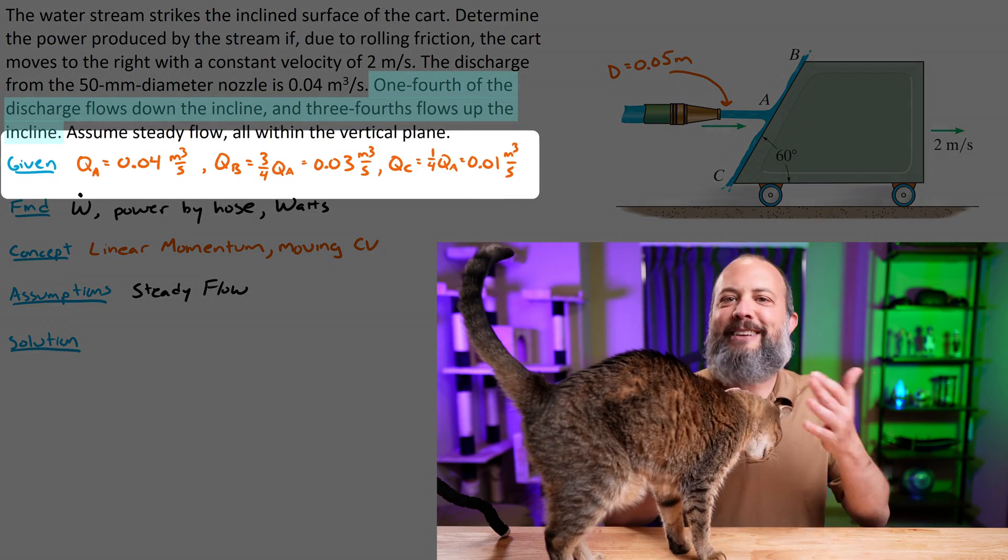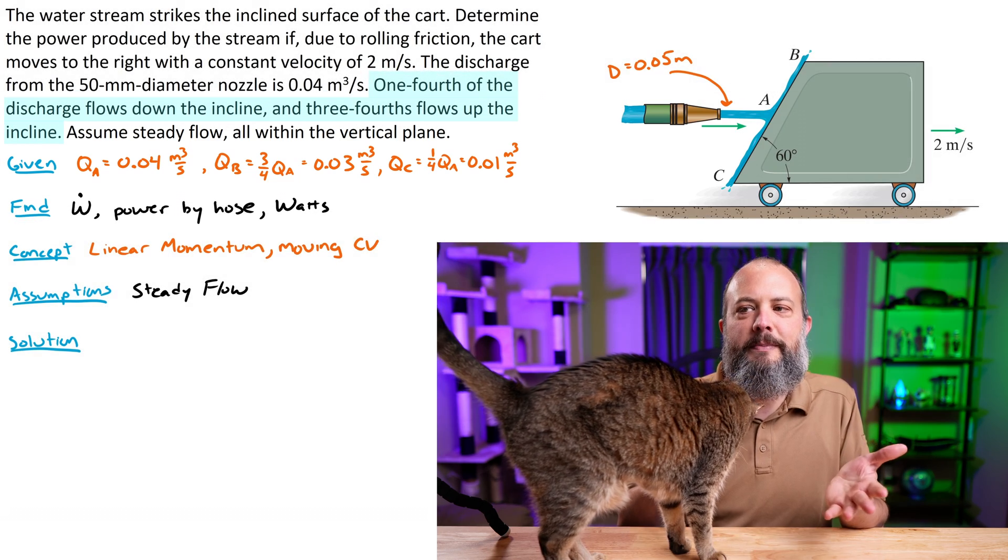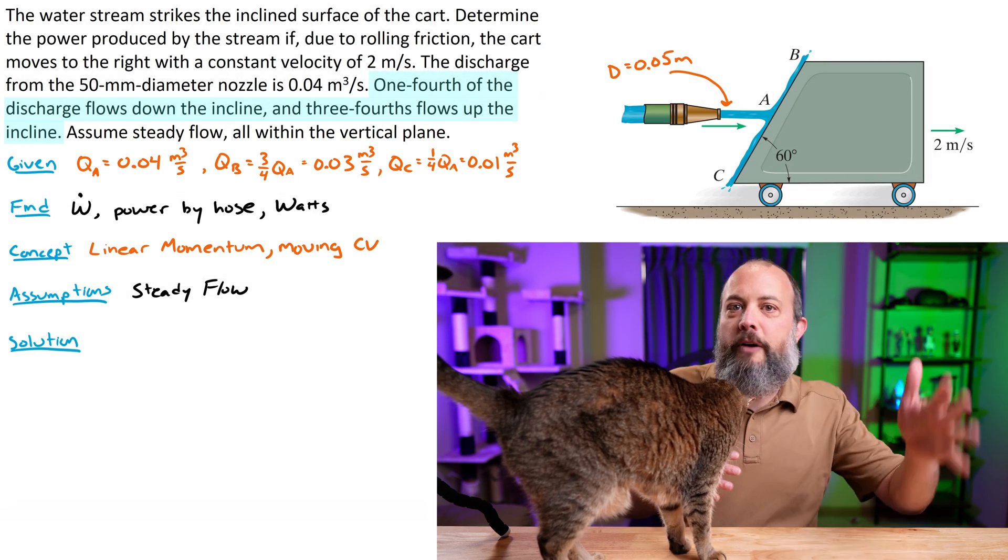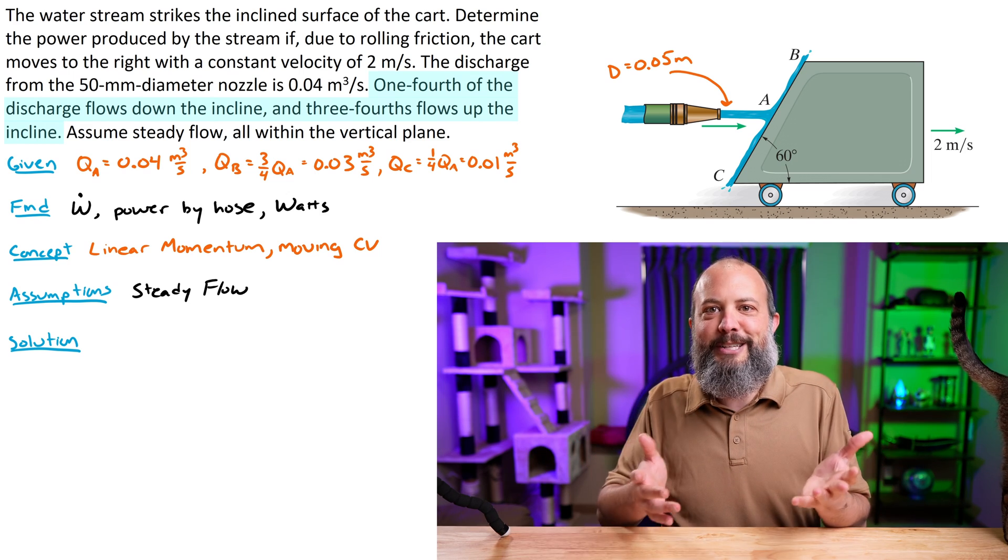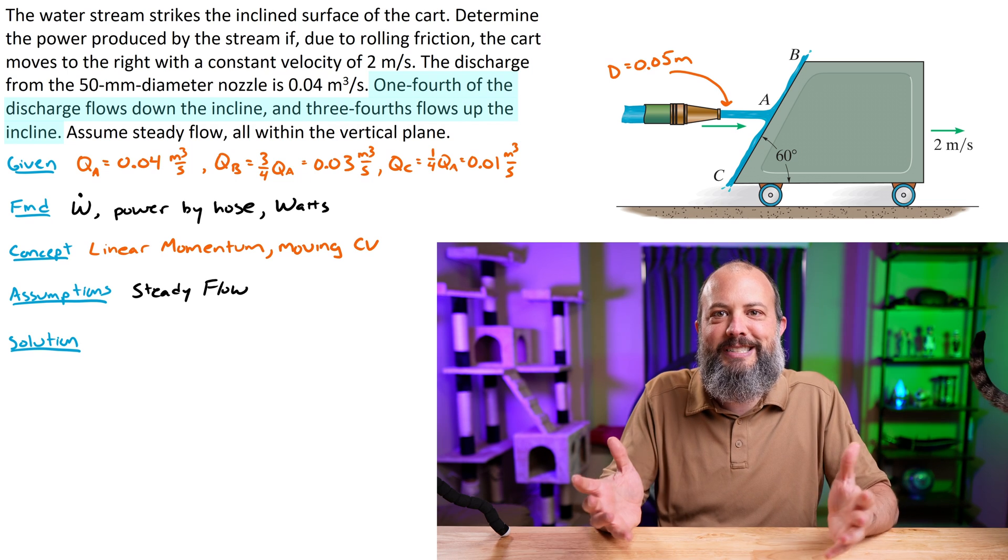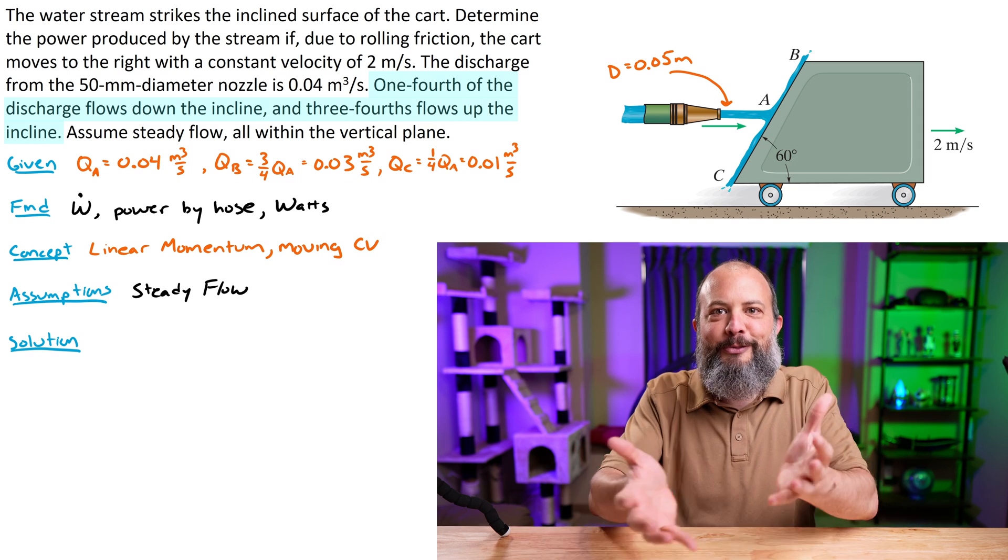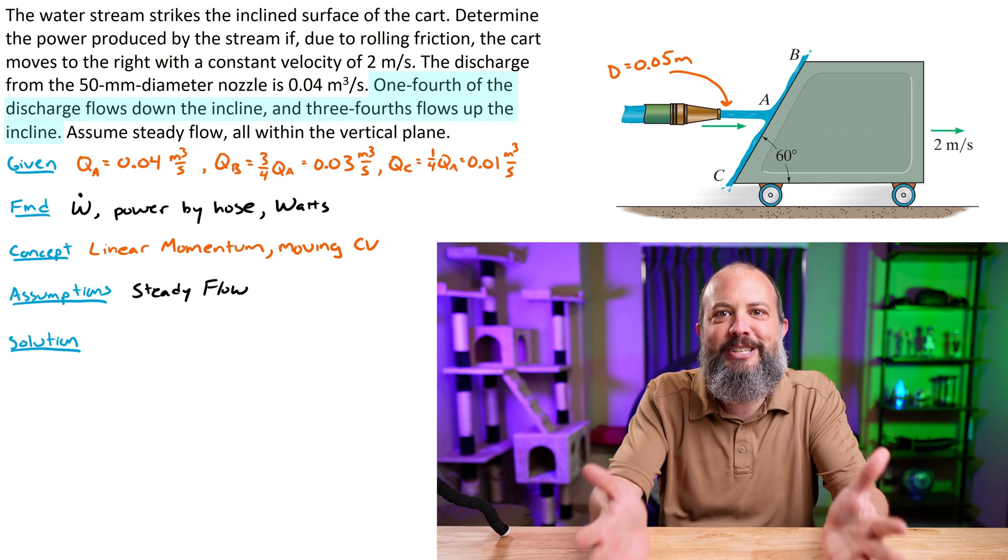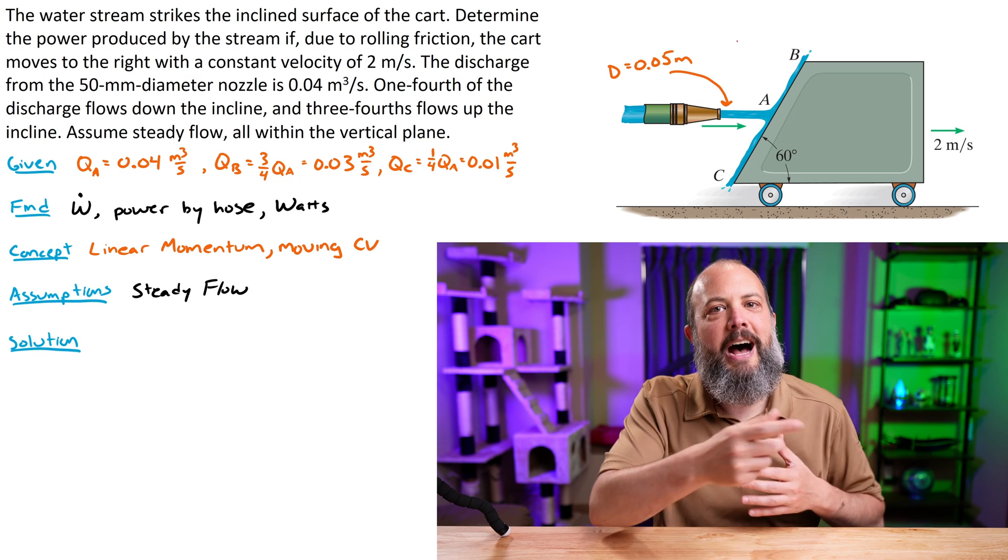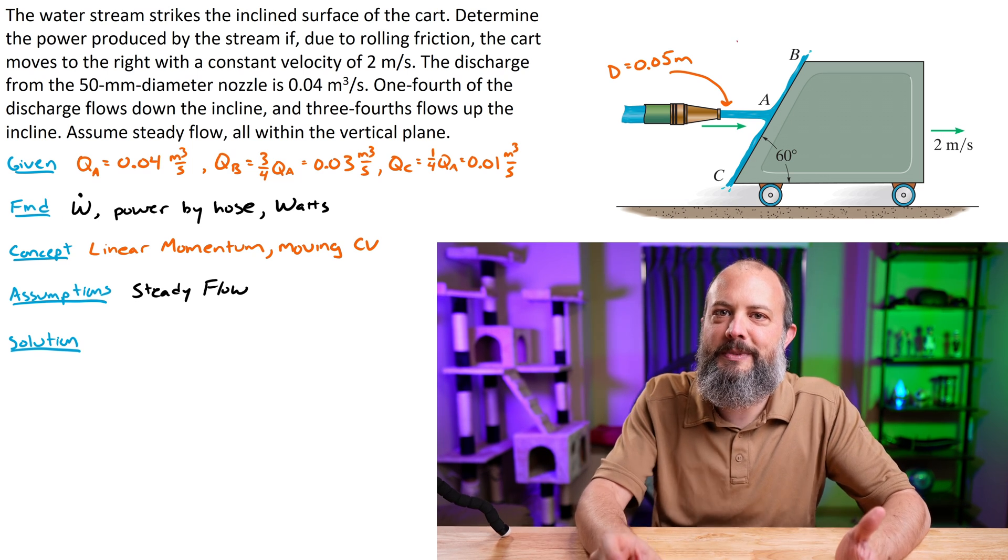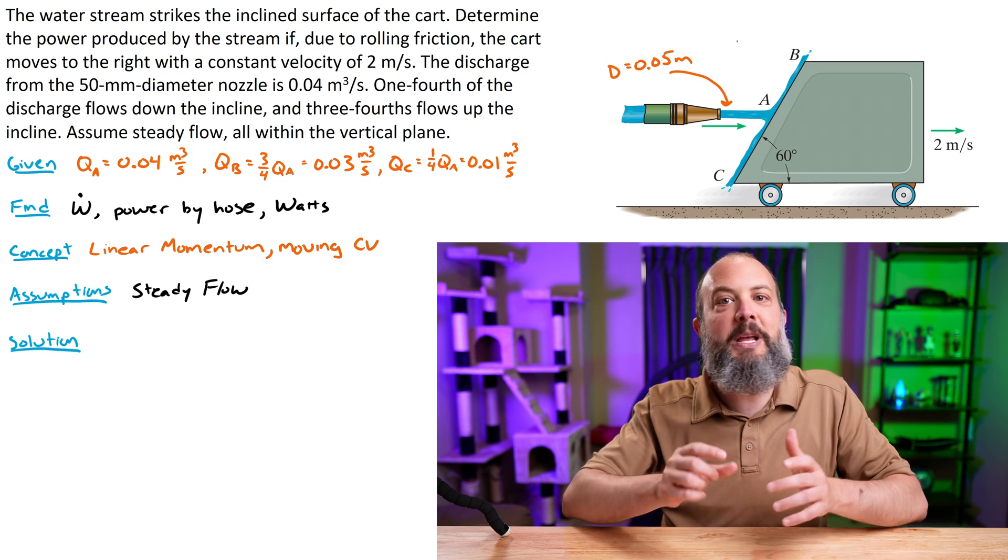But look at what I wrote here as my givens for this problem. I was given that the volumetric flow rate at A was 0.04 and that three-fourths of the flow goes up to B and one-fourth goes down to C. So I thought that's some easy math. Flow rate through B is 0.03 and flow rate through point C is 0.01. But that's all totally wrong. I didn't account for the fact that the control volume is moving. I forgot on the very first line. The flow rate that's provided is the flow rate leaving the nozzle, not the flow rate entering the control volume.